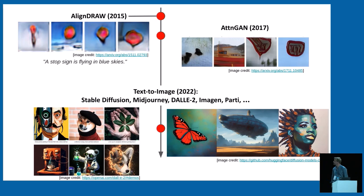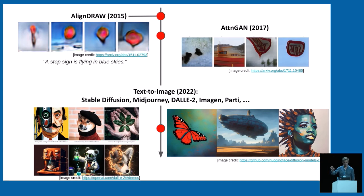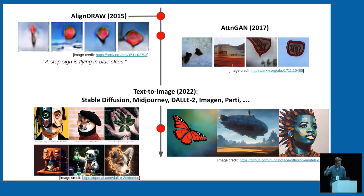The progress this field has made in seven to eight years is extremely impressive. On the top left, we have samples from a very early text-to-image model based on a recurrent neural network. On the top right, we have a GAN trying to synthesize the caption: 'A stop sign is flying in the blue skies.' We see it's barely recognizable — low resolution, low quality.